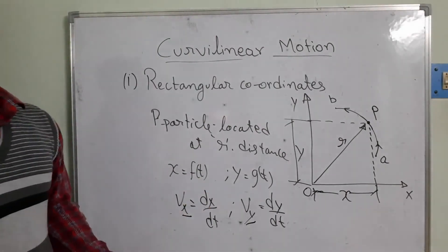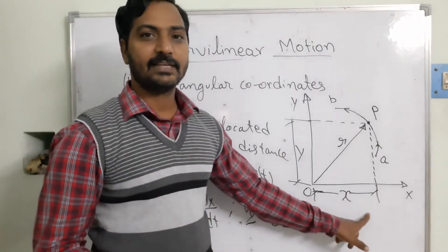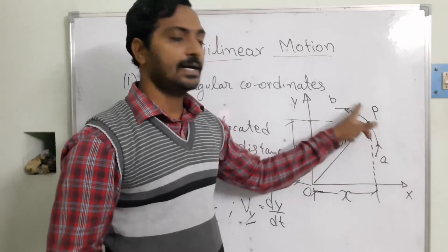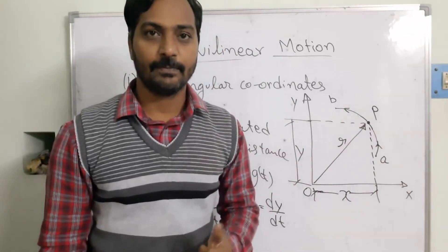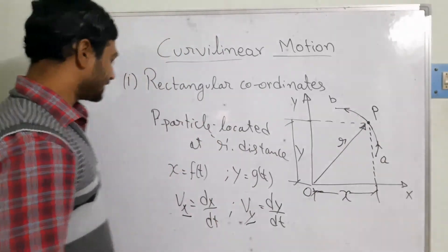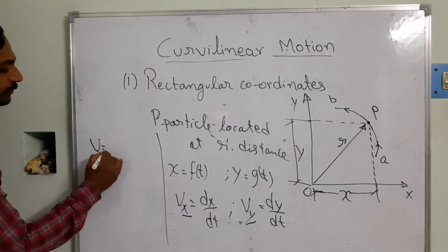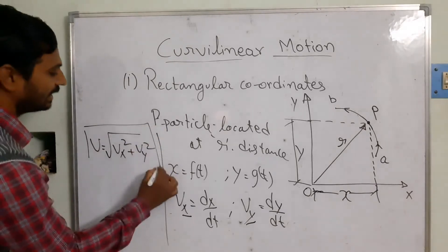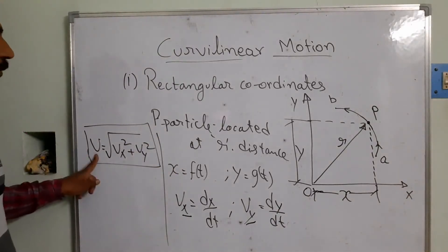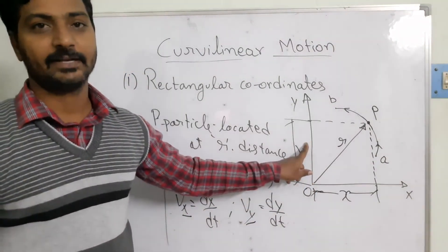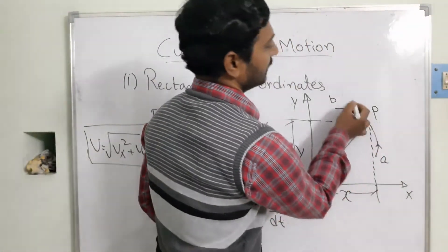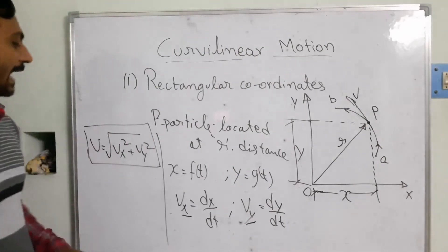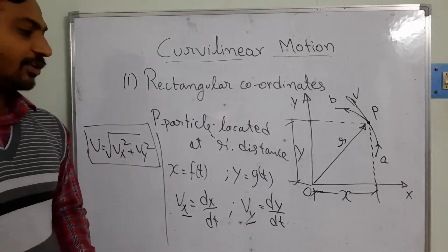The particle is not moving along the x-axis or y-axis, but rather along the curved path, so we need to find the resultant velocity. The formula for resultant velocity is: v = √(vx² + vy²). This resultant v is not in the x direction or y direction, but rather along the curved path in that direction. Once we calculate the velocity, we will similarly calculate the acceleration.